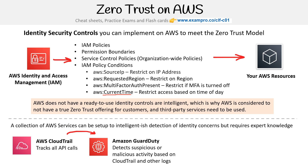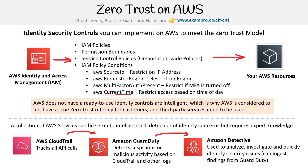GuardDuty could detect suspicious or malicious activity on those CloudTrail logs, and you could follow that up with remediation. Or you could pass that on to Amazon Detective, which could analyze, investigate, and quickly identify security issues by ingesting data from GuardDuty. But this setup is not easy for the consumer — you can do the zero trust model, but it's going to take a lot of work, and there are some limitations we'll talk about next.